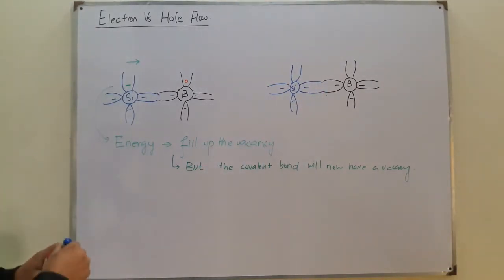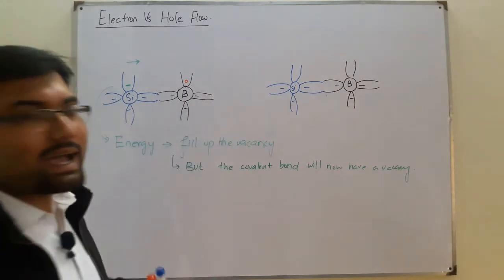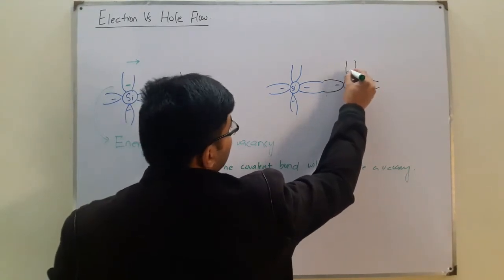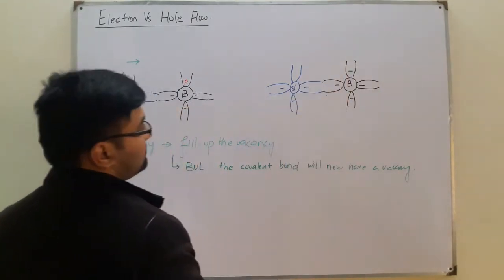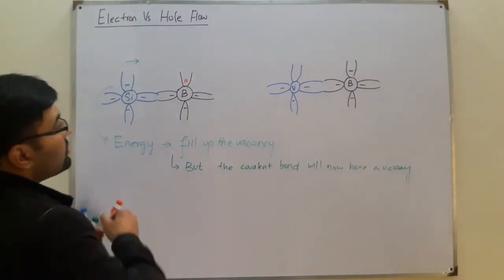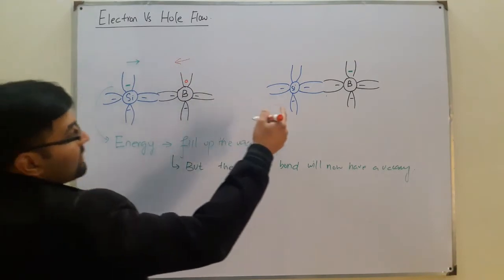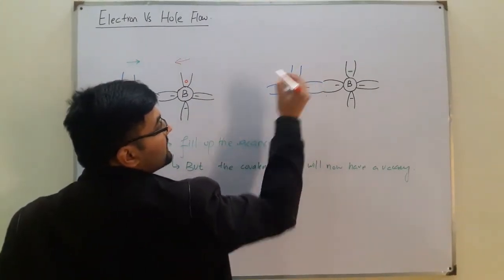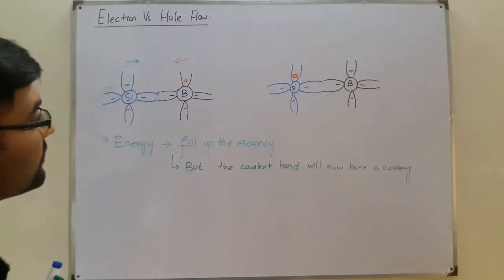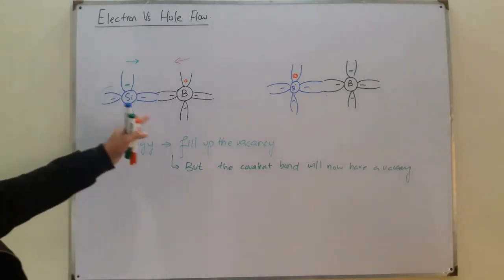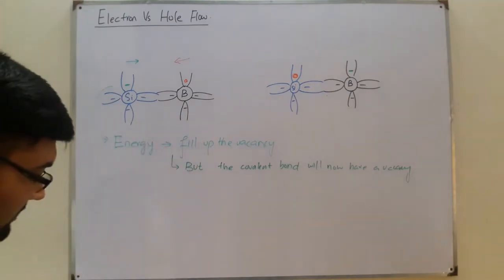We saw that this electron was given sufficient energy to move out of this atom and fill up the space of this vacancy. So that hole has now moved to the left, which means now here we have a vacancy of electron in the covalent bond. So what happens is that we have both the movement of electrons and we have the movement of holes.